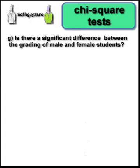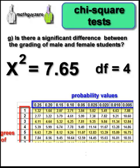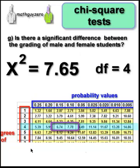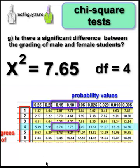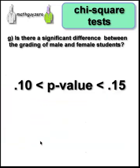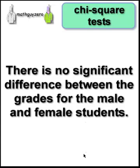Here's the million-dollar question: is there a significant difference between the boys and the girls? We've got the chi-squared and the degrees of freedom, so we look up the p-value in the chi-squared table. With 4 degrees of freedom, 7.65 falls between two values — the probability is between 0.15 and 0.10. That p-value is greater than 0.05, so we're not going to reject the null. Therefore, there's no significant difference between the genders in the grading.